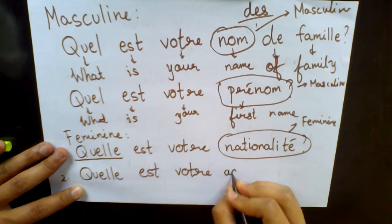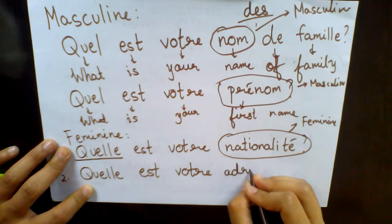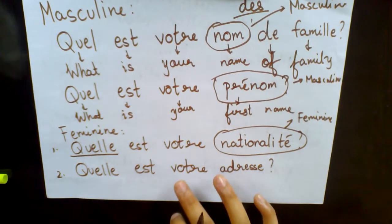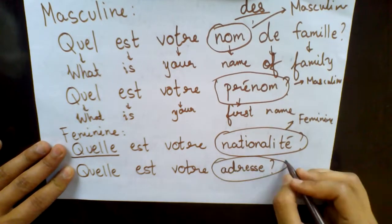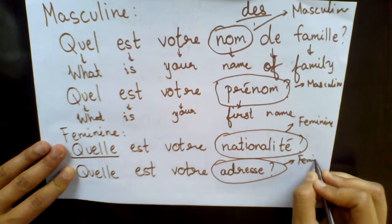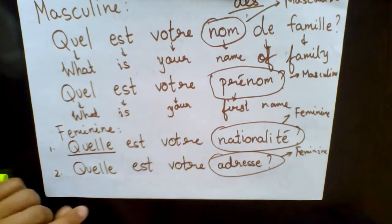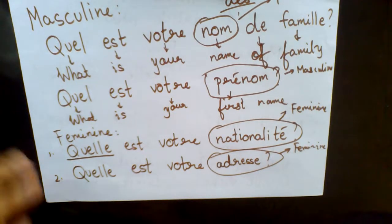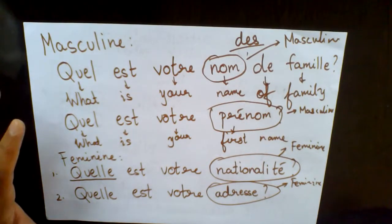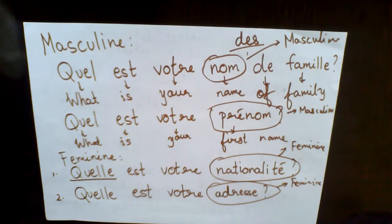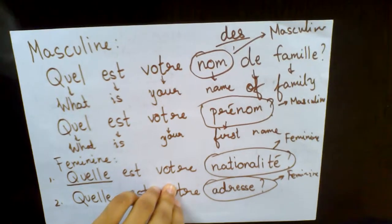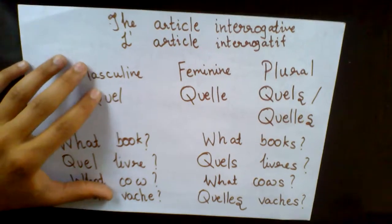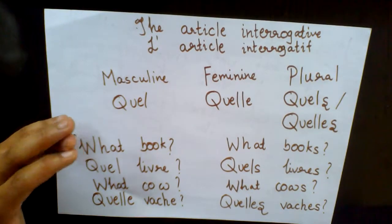One more example: 'quelle est votre adresse?' means 'what is your address?' — 'adresse' is a feminine word, so you use 'quelle.' This is all for this lecture. I hope you understood. For any doubts and queries, please ask in the comments below. If you liked this video, please like, share, and subscribe. I hope you understood the basic difference between the masculine, feminine, and plural forms. Thank you and have a nice day!